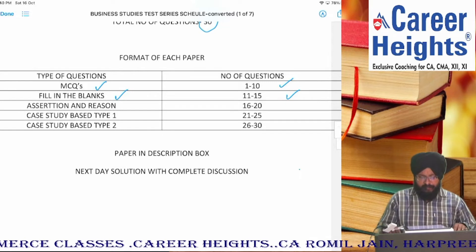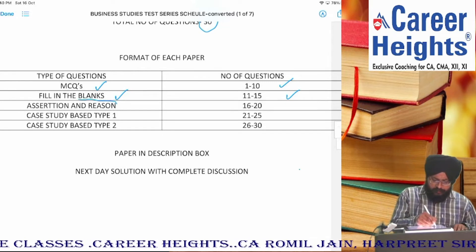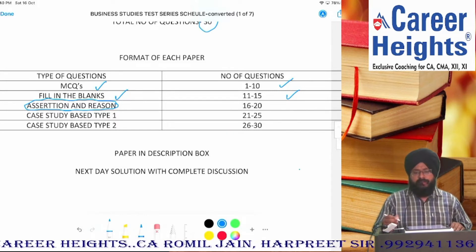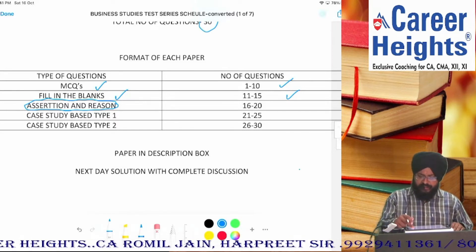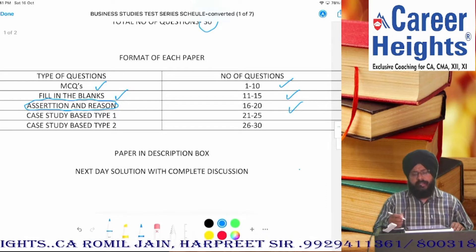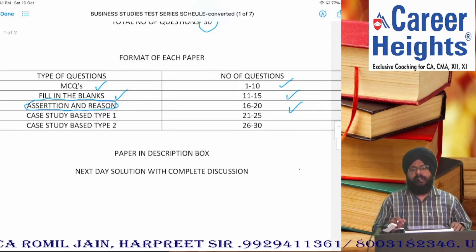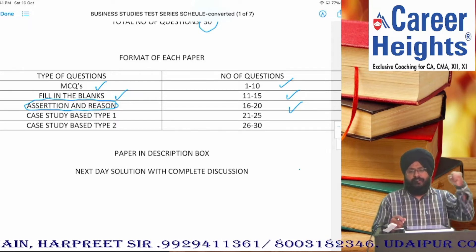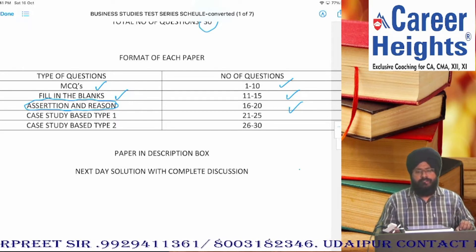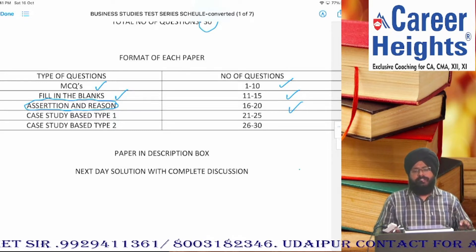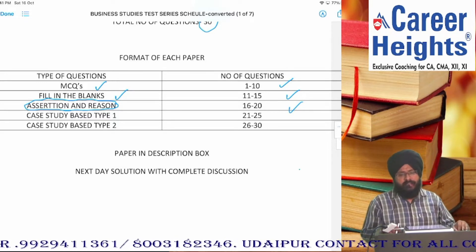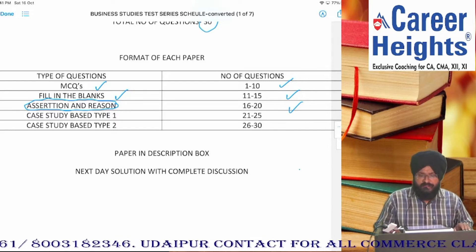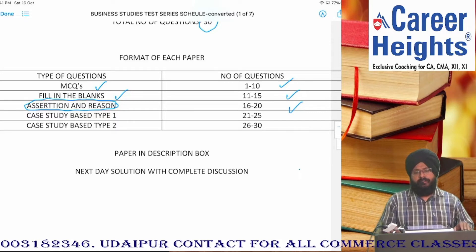Tisra jo type hai hamare paas mein hai — assertion and reason based questions. So jo assertion and reason based questions hain, woh honge 5. Assertion-reason based ka number bada sakta hai because it is a new variety, aur yahaan par CBSE kahi na kahi paper ko tough banane ki koshish karega. Par agar hamare concepts strong hain, aur aane waale kuch dino mein hum log conceptual videos ki bhi ek series laane waale hain, so you can clarify your major concepts through this channel, through me and through Career Heights.